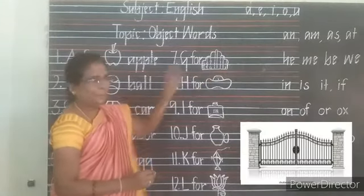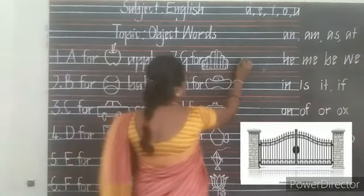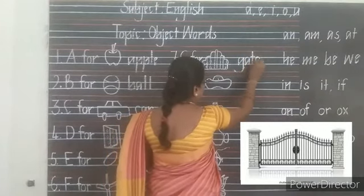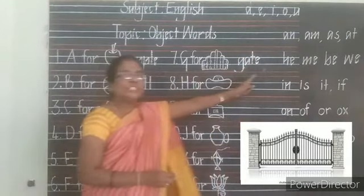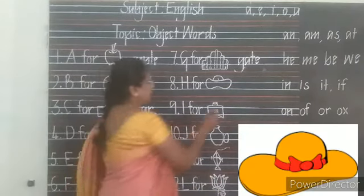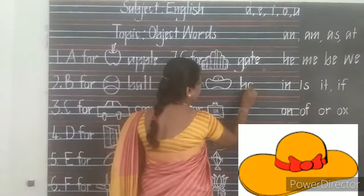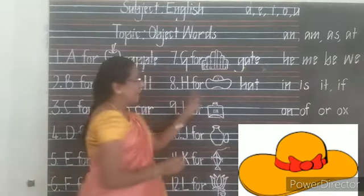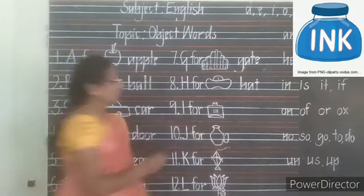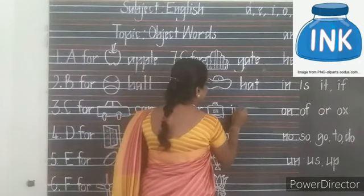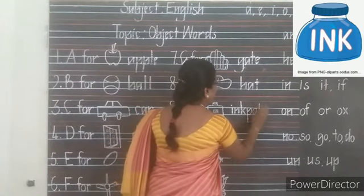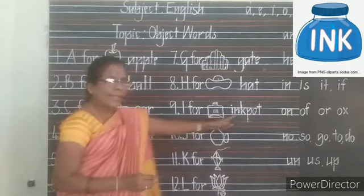G — Gate. G-A-T-E, Gate. G-A-T-E, Gate. H — Hat. H-A-T, Hat. I — Ink Pot. I-N-K P-O-T, Ink Pot.